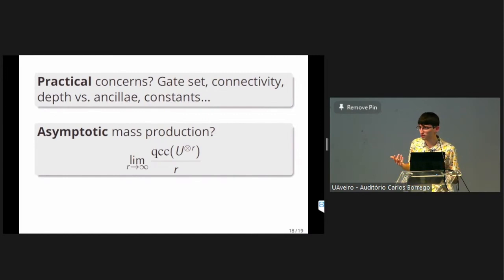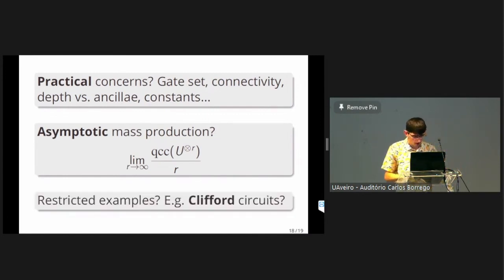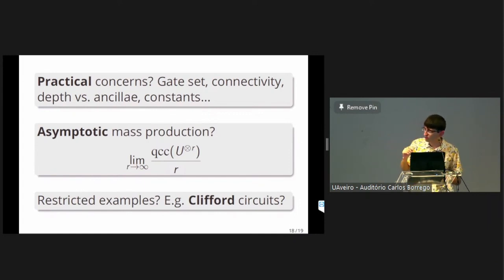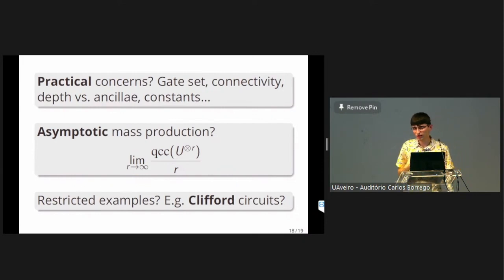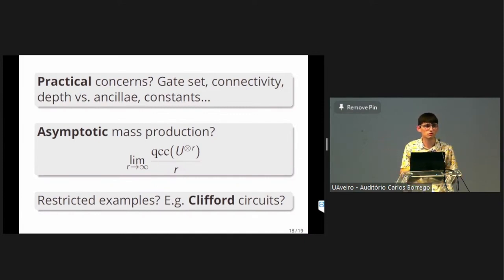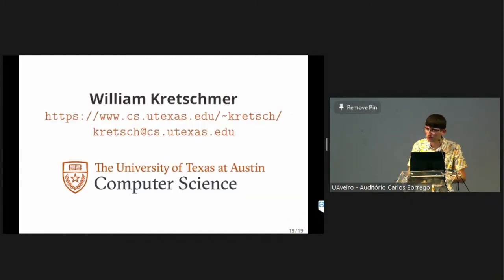This question is also closely related to something known as the unitary synthesis problem, if anyone has heard of that. And finally, another question is: are there any natural restricted classes of quantum gates that exhibit these sorts of mass production phenomena? For example, Clifford circuits? I don't know the full answer — at least I know a partial answer. If you have a Clifford circuit and want to compute many copies of it, there's some trick involving fast matrix multiplication to compute it using fewer gates overall, but that decomposition will use non-Clifford gates. Whether you can get anything like that using only Clifford gates is an interesting question. And with that, I think I will stop there and I'd be happy to take any questions.